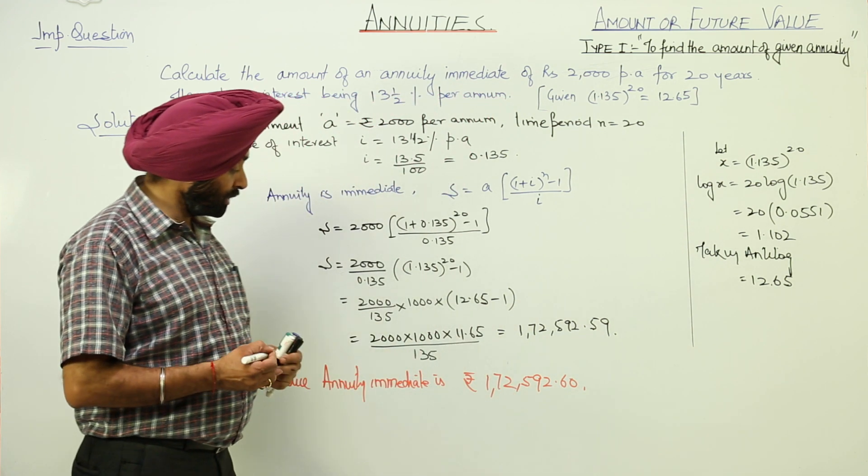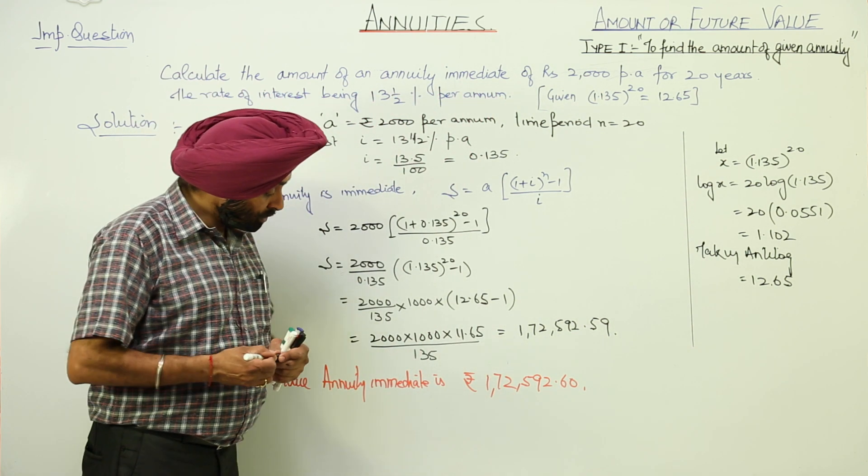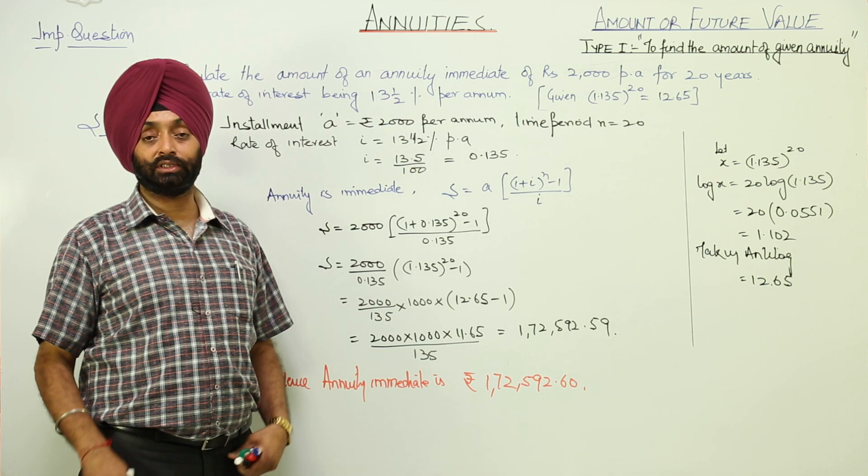So, immediate annuity is rupees 172592.60.